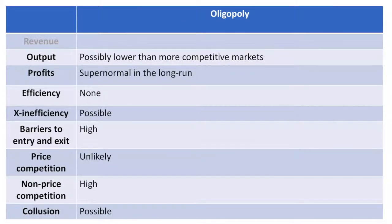In an oligopoly, firms can restrict output to drive prices higher. They are able to achieve supernormal profits in both the short run and long run. Their prices are likely to be above marginal cost, which means they are not allocatively efficient. Their production costs may not be at the lowest possible, so they are also not productively efficient. Exit efficiency can be an issue if their costs are not as low as they could be. Barriers to entry and exit are quite high, which is a key feature of a less competitive market.